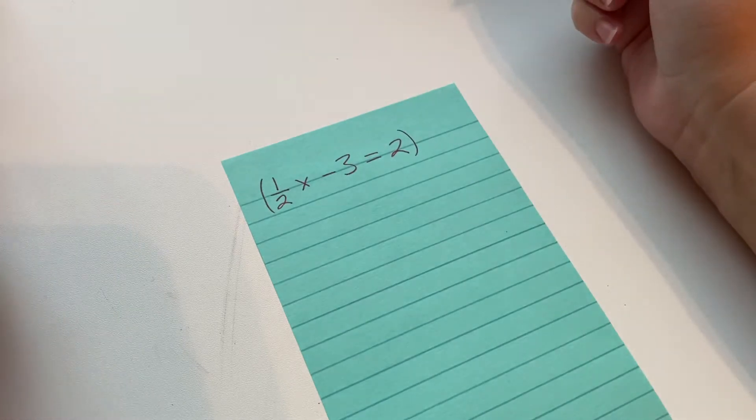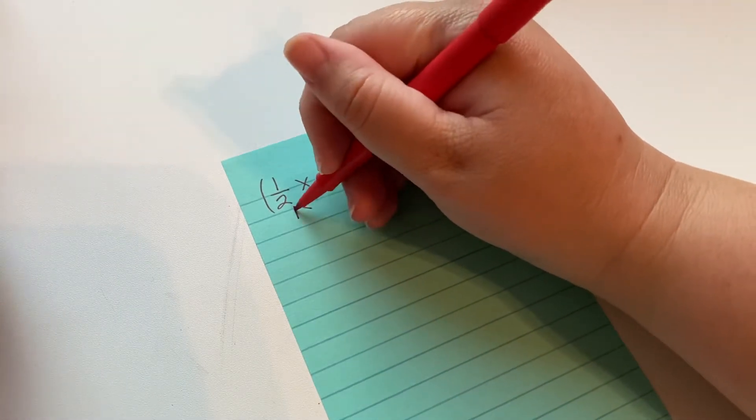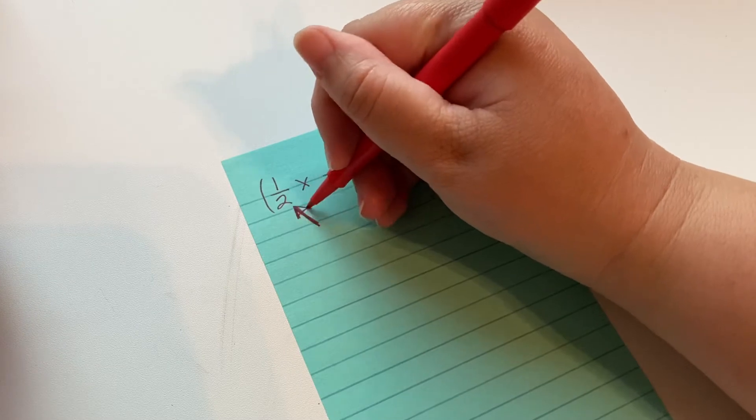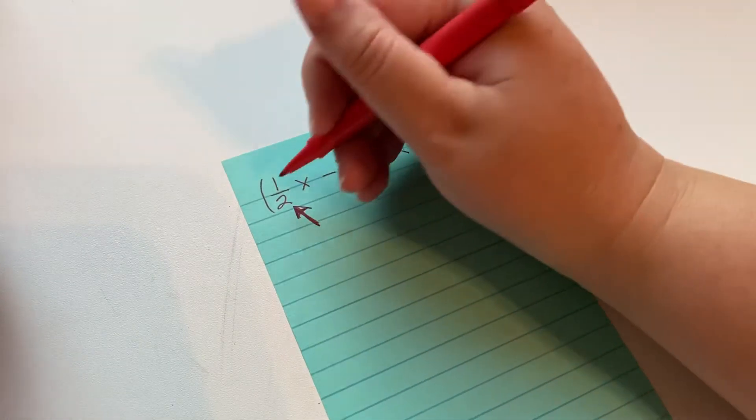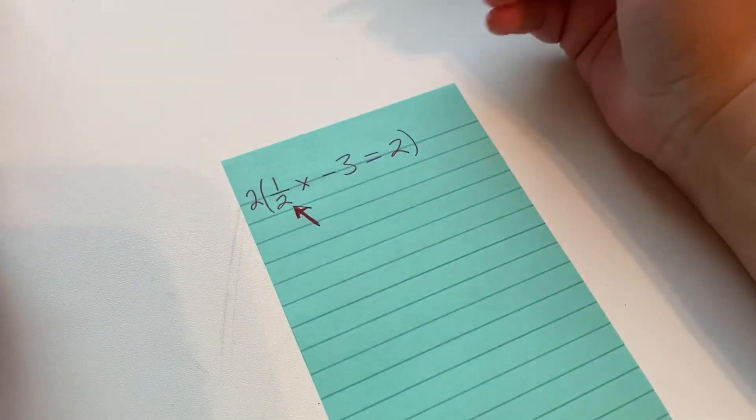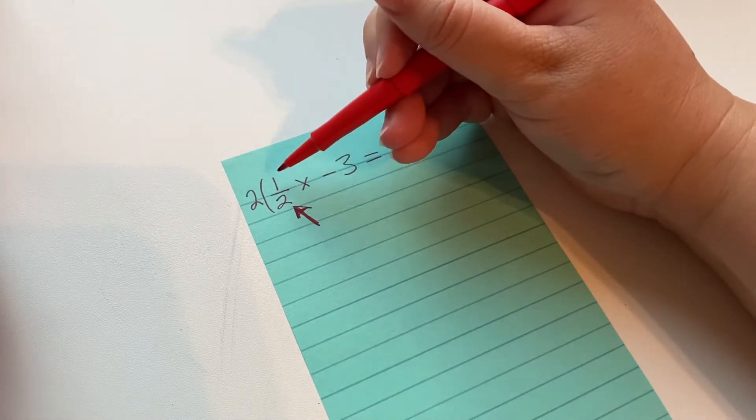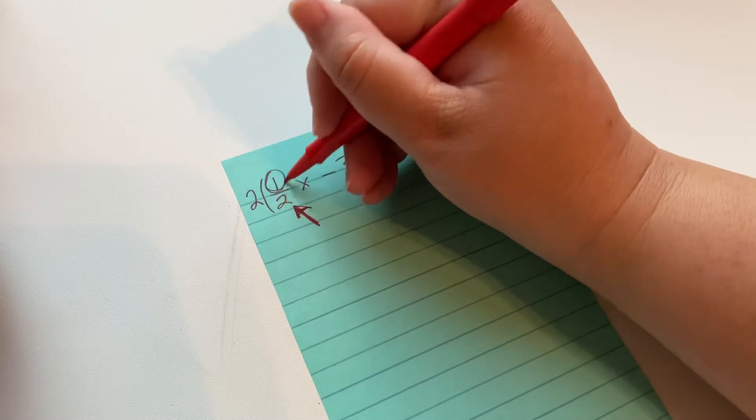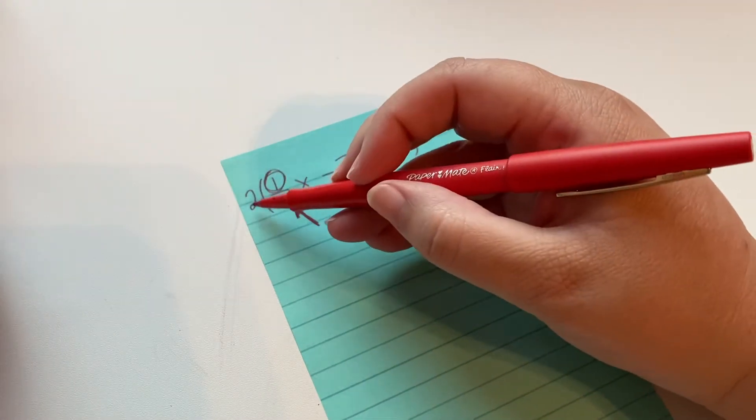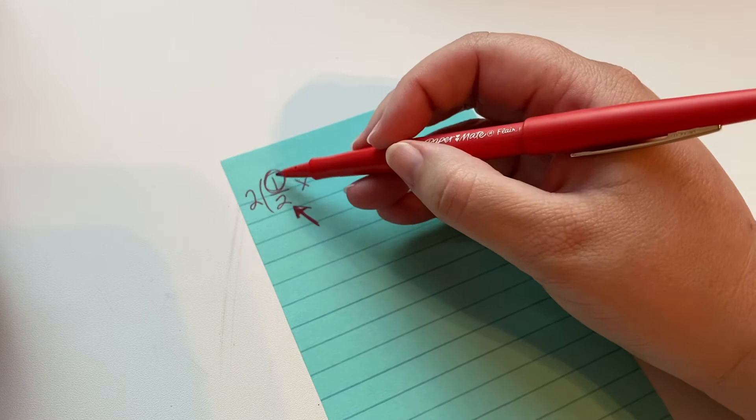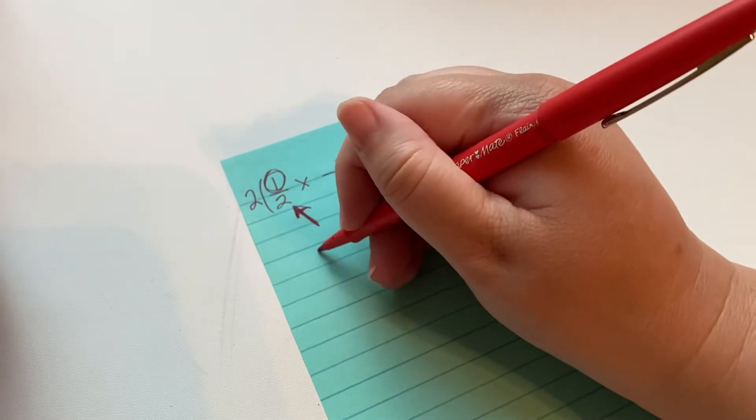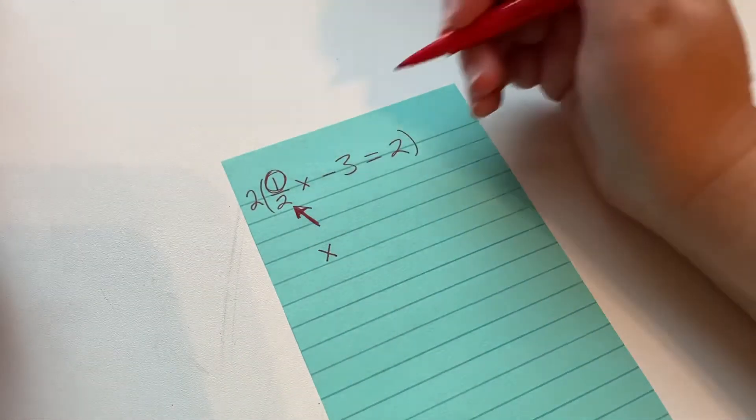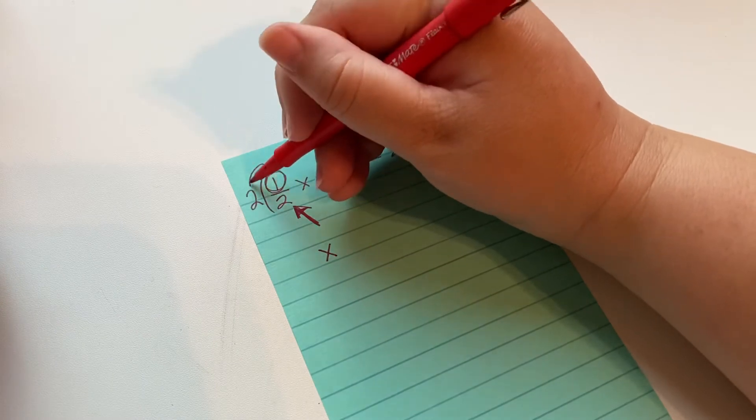We're going to multiply the entire equation by the denominator. So we're going to times everything by 2. When you multiply a fraction by its denominator the result will be whatever the numerator is. In this case it's 1. So 2 times 1 half is equal to 1. So we're left with 1x.